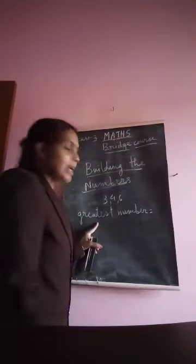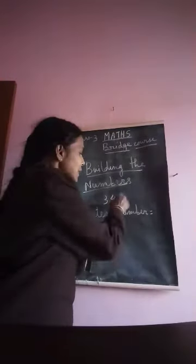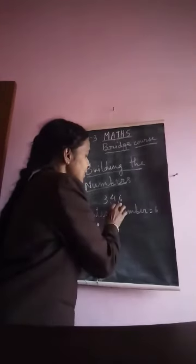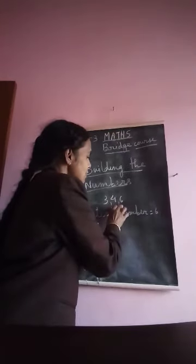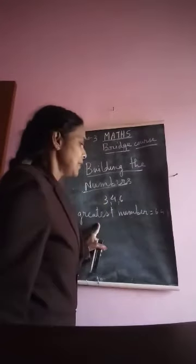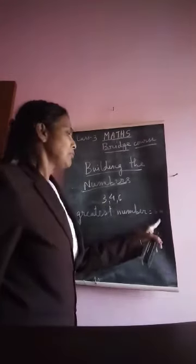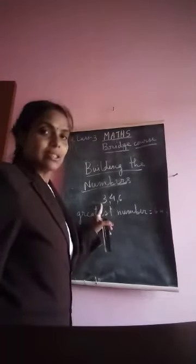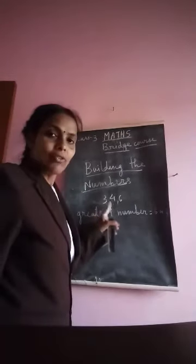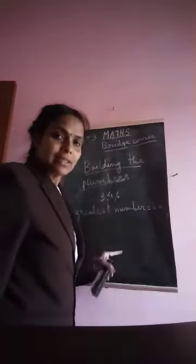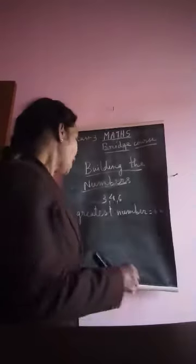Take another example. To build the greatest number from digits 3, 4, and 6, arrange in descending order: write 6 first, then 4, then 3. So 643 is the greatest number built using digits 3, 4, and 6.